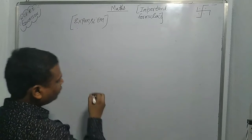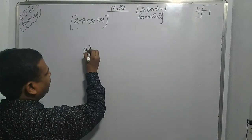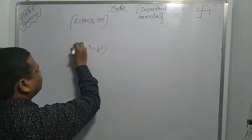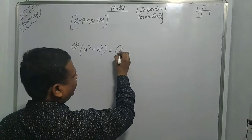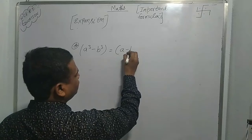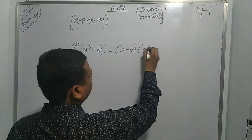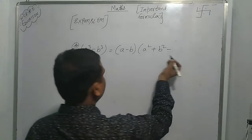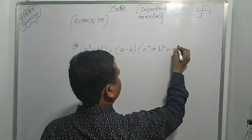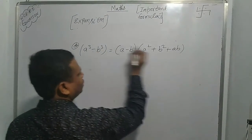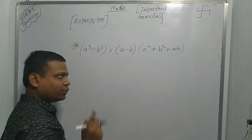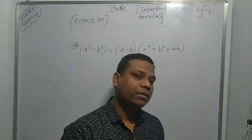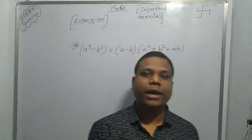An important formula: a cubed minus b cubed equals (a minus b)(a squared plus ab plus b squared). Note: when there is a minus sign between the cubes, there is a plus sign inside the bracket.